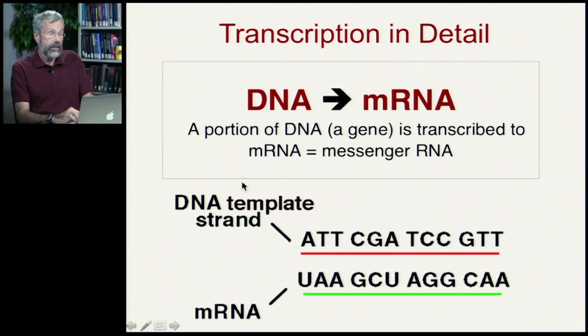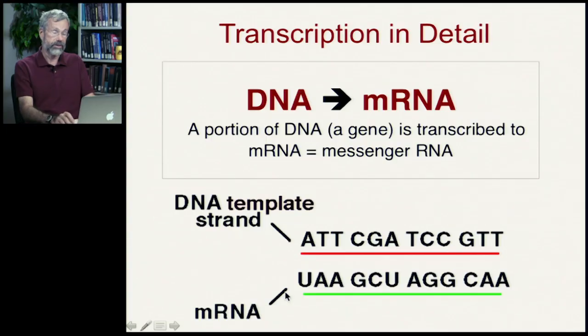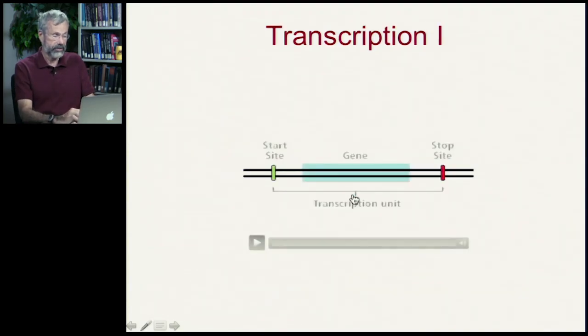So we have the DNA, one of the double strand, one strand of the double-stranded DNA is used as a template, and that is then transcribed to produce an mRNA. U with A, A with T, G with C, C with G. So now we have some more videos here.